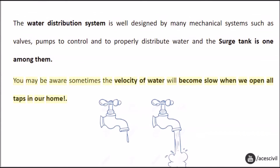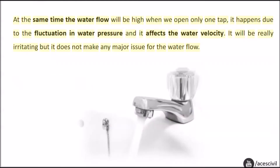You may be aware that sometimes the velocity of water will become slow when we open all taps in our home. At the same time the water flow will be high when we open only one tap. It happens due to the fluctuation in water pressure and it affects the water velocity. It will be really irritating but it does not make any major issue for the water flow.